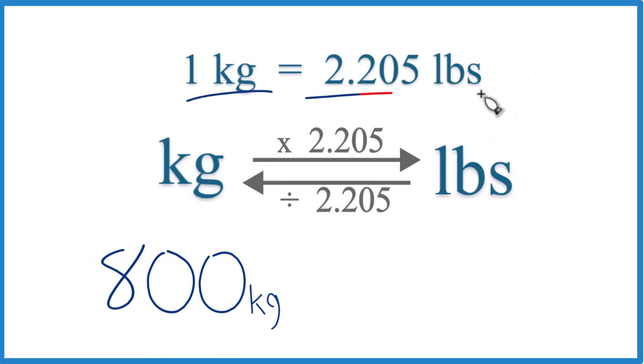One kilogram equals 2.205 pounds. So if one kilogram is 2.205 pounds, then 800 kilograms will just be 800 times this number here.